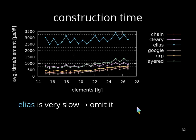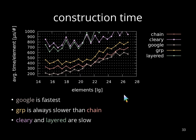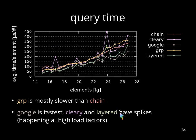For the construction time, we can see that Elias is very slow. To focus on this part, we do the same plot but without Elias. Here we can see that Google is the fastest option, then followed by chain, then by group, and the slowest options are Cleary and layered. Considering the query time, we can see that group is mostly slower than chain, Google is the fastest, and in between are Cleary and layered, which have sometimes spikes that happen at higher load factors.